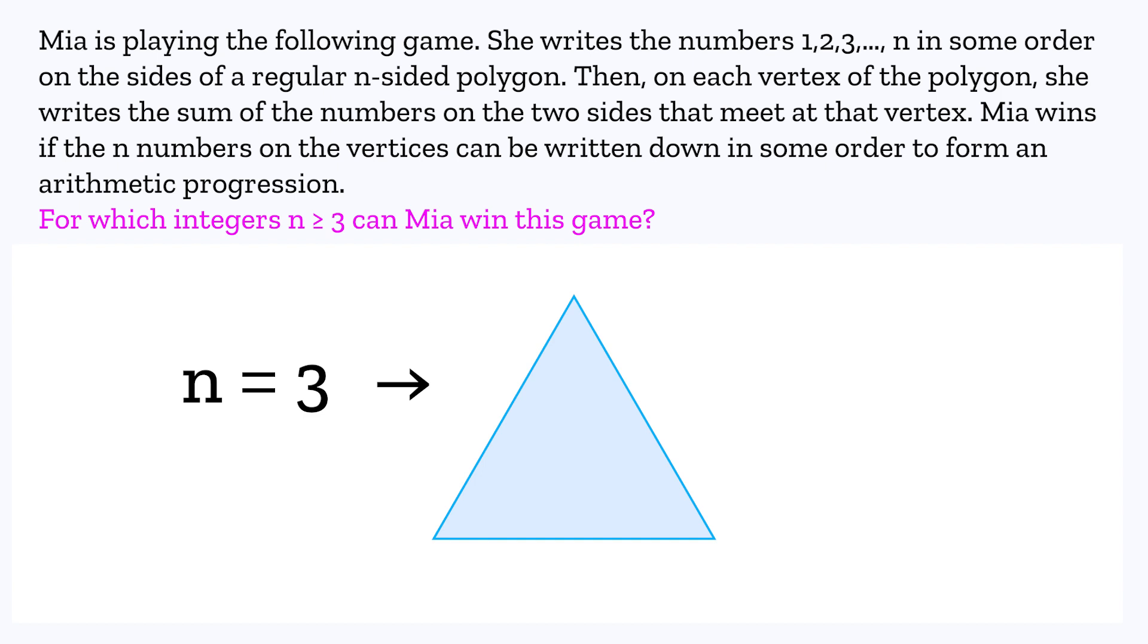And if you try it yourself, you'll find that any way you order 1, 2, and 3 on the sides, you would always get the sums of 3, 4, and 5 on the vertices, which are an arithmetic progression. So Mia wins.